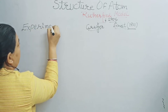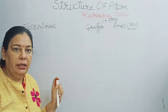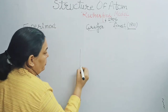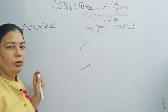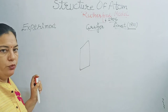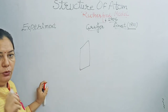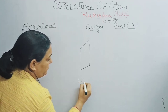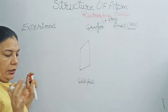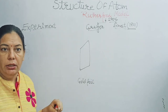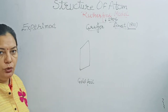What did Rutherford do? He took a gold foil and bombarded alpha particles on it. We will also learn in detail why he selected gold foil specifically for his experiment. He took a gold foil and bombarded alpha particles on it.